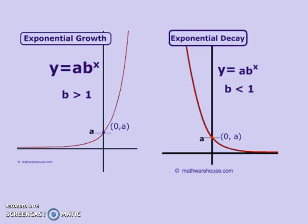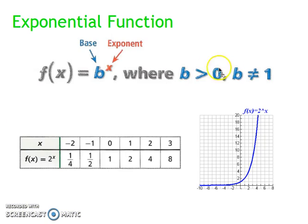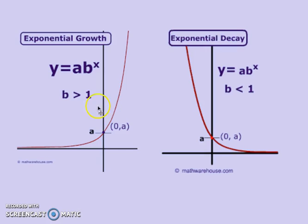Keep in mind, for this to be an exponential function, b had to be greater than 0 for it to even be exponential. So if it's greater than 1, it's a growth. If it's less than 1, it's a decay. And your a will show you where your y-intercept is.